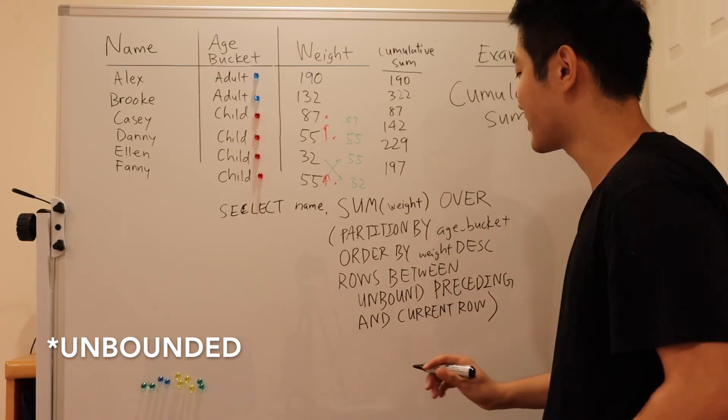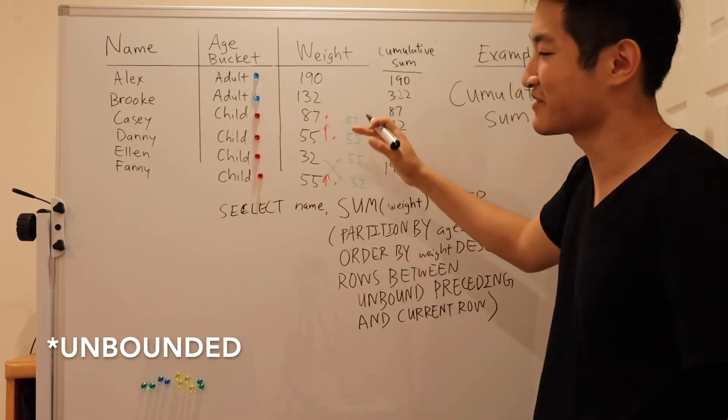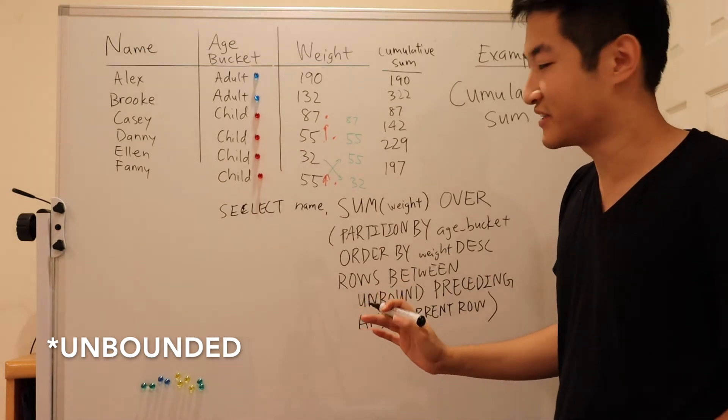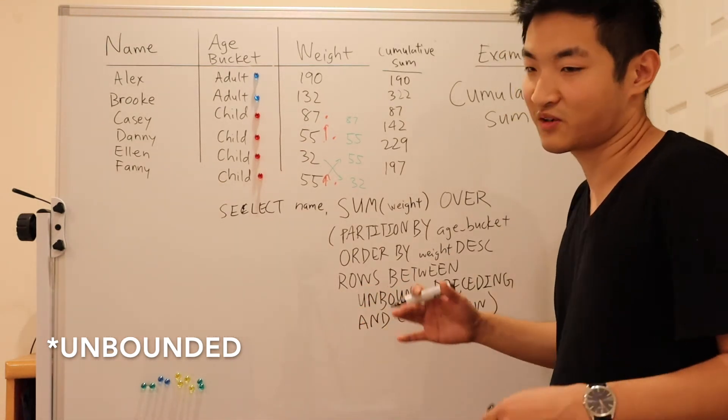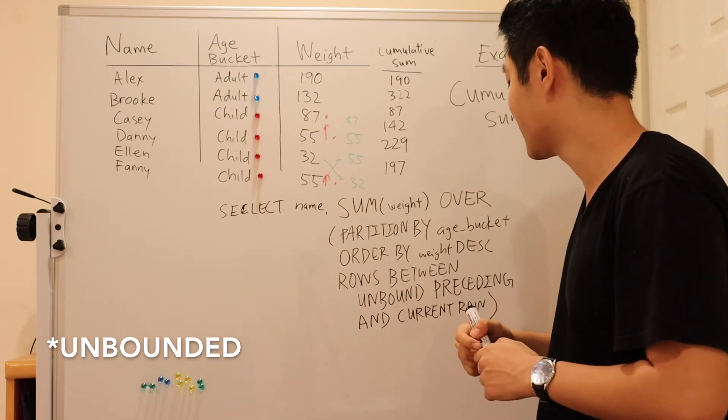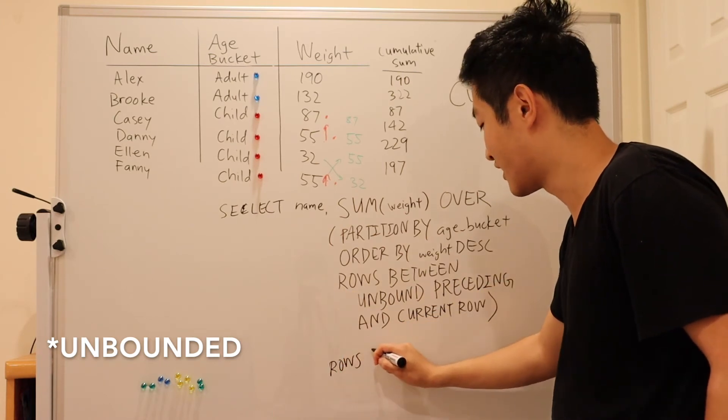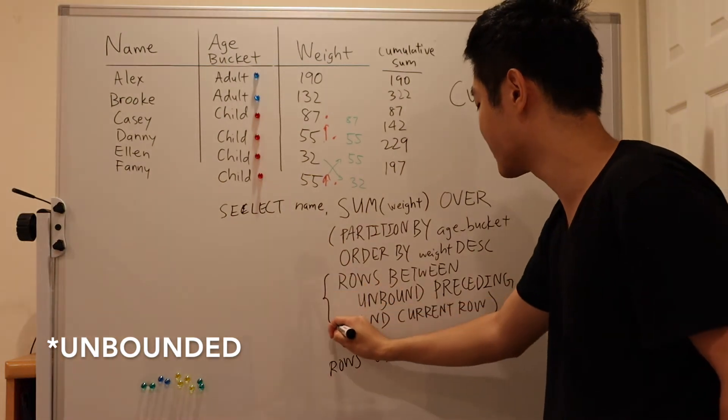Of course, you might wonder, hey, these are so many keywords for such a simple task. Well, the default of SQL is to just assume that the current row ends a window of unbounded proceeding. So you can just summarize this into rows unbounded proceeding. So these two are basically equivalent.